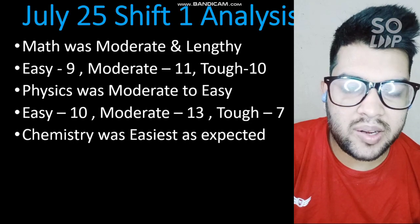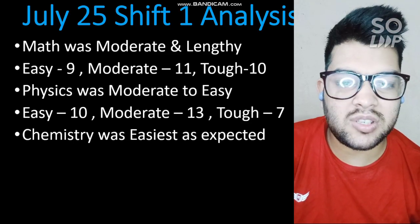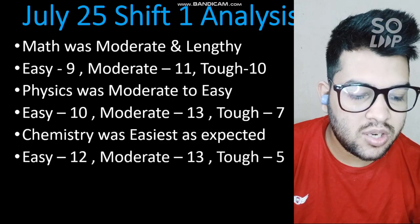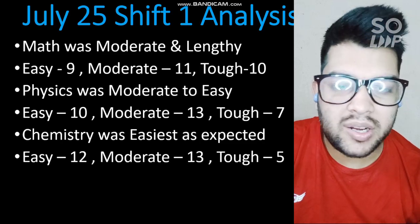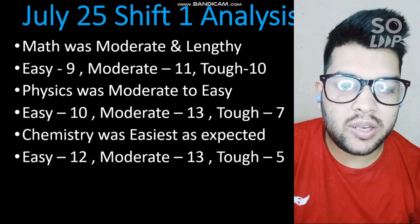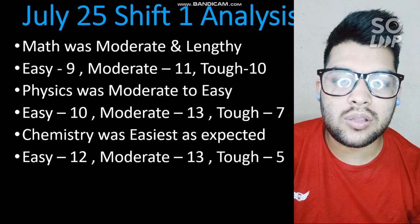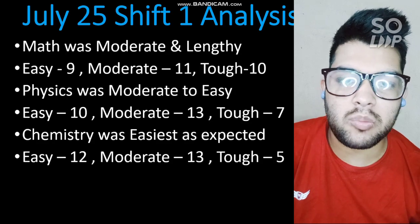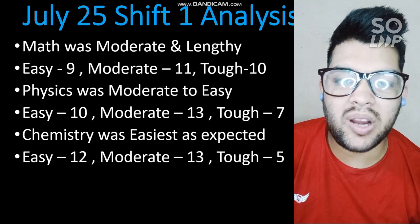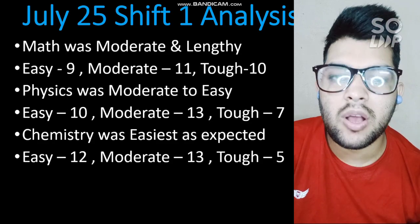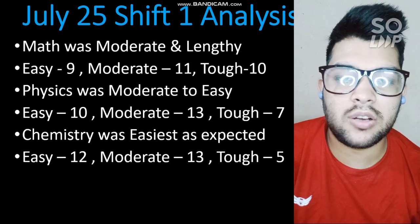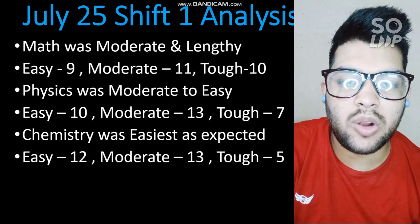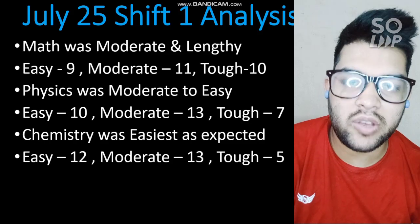Chemistry was the easiest among the three subjects, as expected — same as in earlier shifts. Easy questions were 12, moderate were 13, and tough were 5. The syllabus is uniformly distributed in each subject — there was one or more questions from each topic. So focus on topics you already know and revise them, because you will get questions from every topic. Don't go to topics you don't know well.